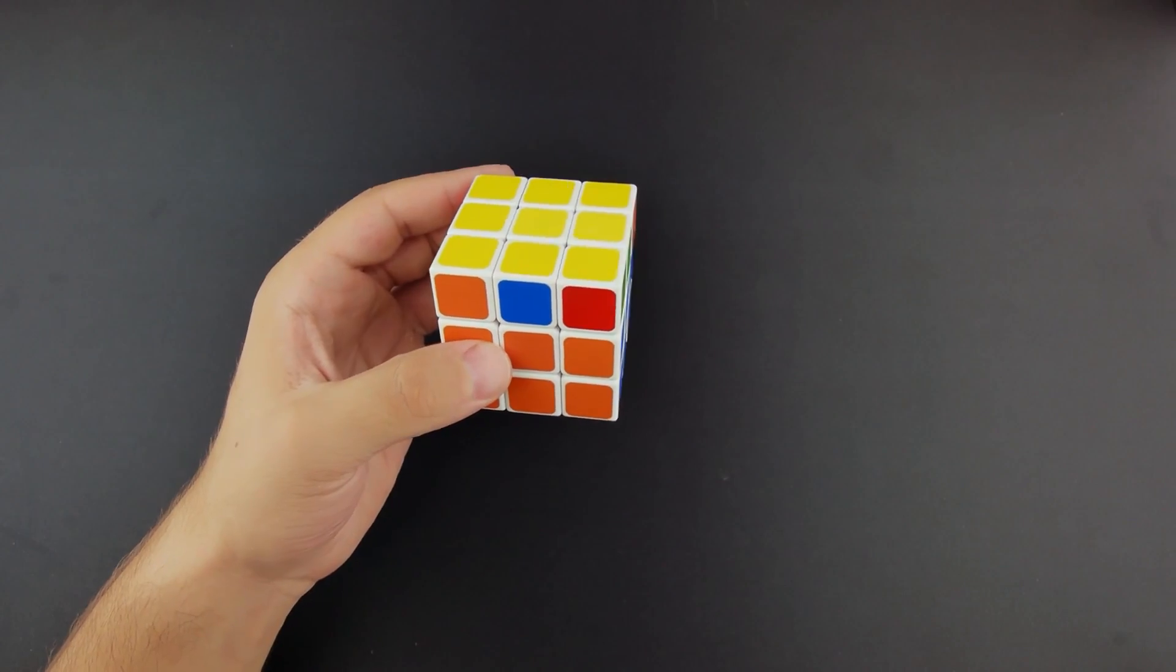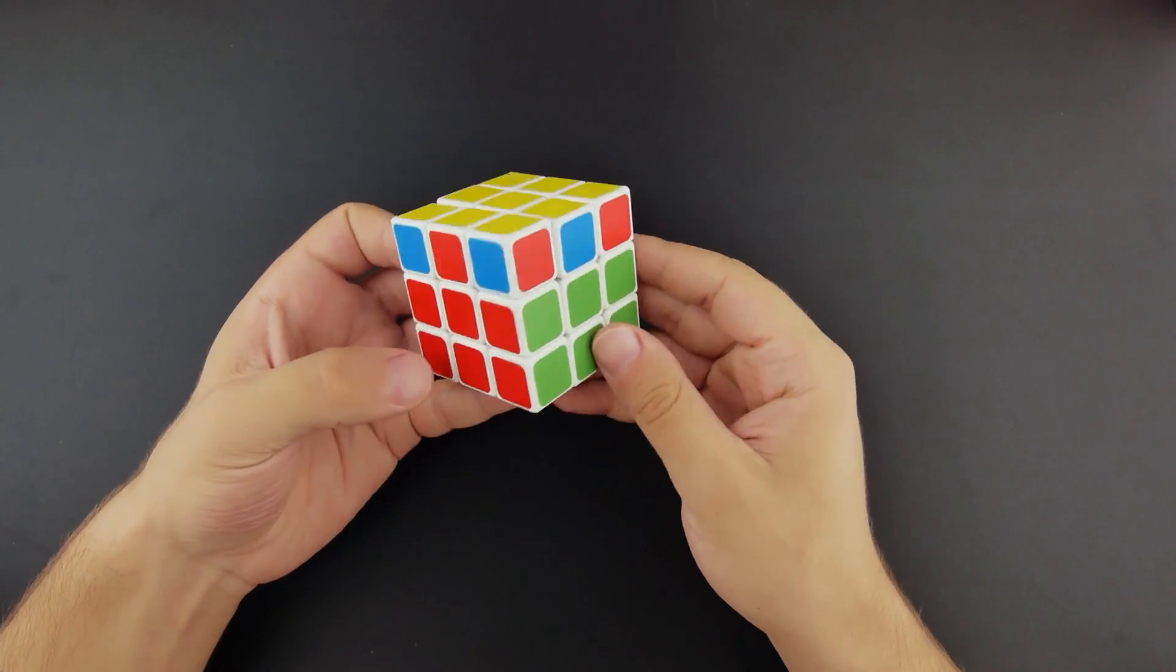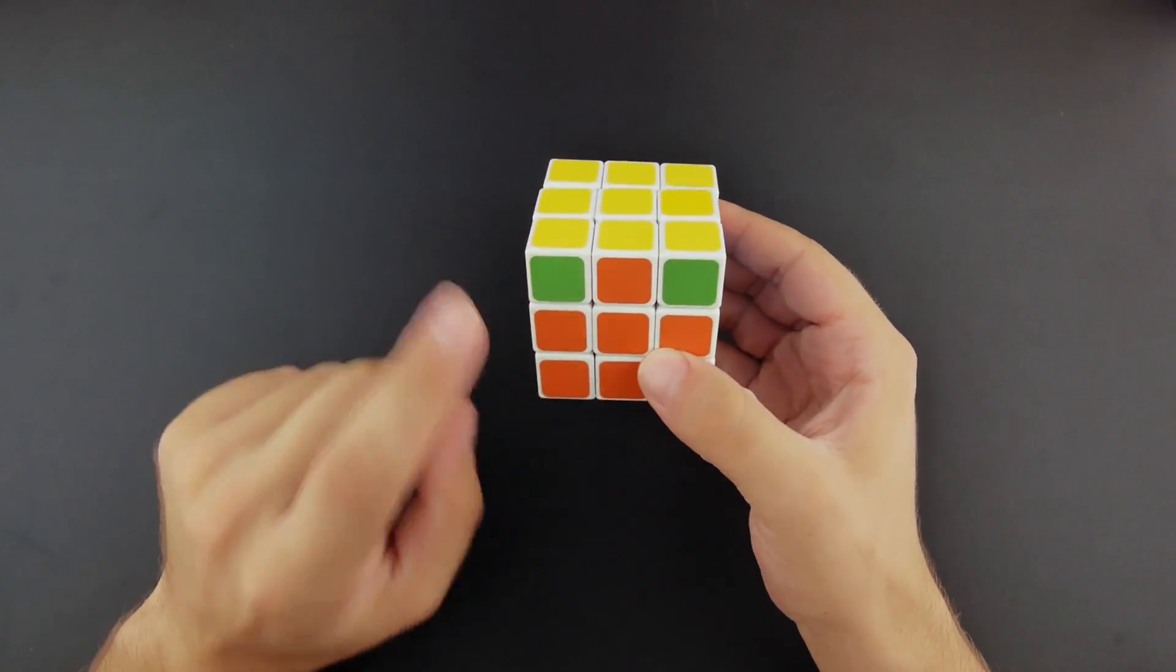To solve the corners of the yellow side, we have to make them match each other. To do it, first turn your cube upside down so that the yellow side is again facing on top.